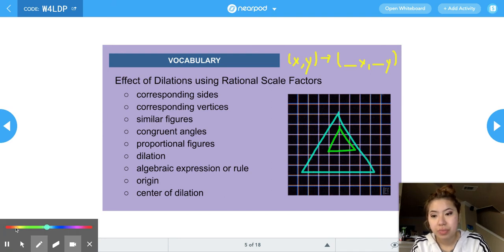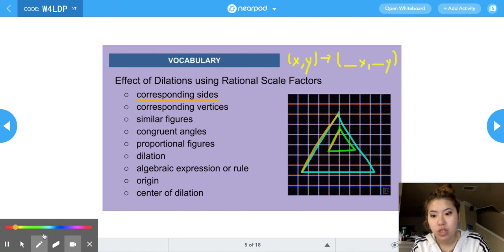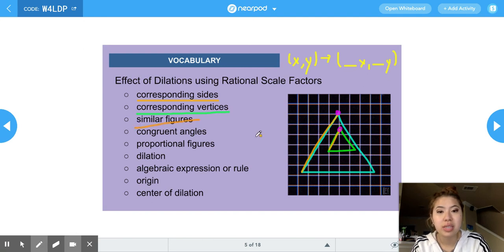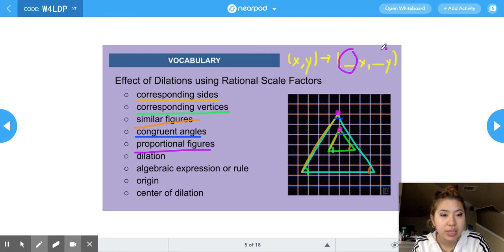So for corresponding sides, if we had these two similar shapes or these dilated shapes, this would be the corresponding side of this one, because as you can see, it's in the same place. Corresponding vertices. So this point right here would be the corresponding vertices to this point right here. Dilations are examples of similar figures since the shapes are the same, it's just the sizes are different. Congruent angles. Congruent angles in dilated shapes, the angles are congruent. So this angle is the same measurement as this angle. This angle is the same measurement as this angle. Proportional figures. They're proportional. Similar figures are proportional because there's a scale factor, which is the number that goes in front of the second part of the algebraic representation.